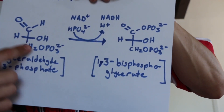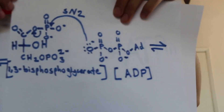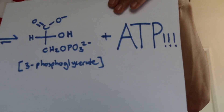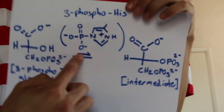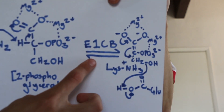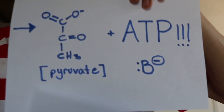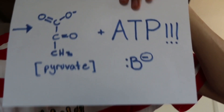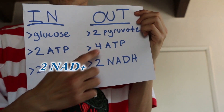Glyceraldehyde is then oxidized. Then you create bisphosphoglycerate, it's high in energy. Matter of fact it's so high in energy, it recreates ATP. 3-phosphoglycerate uses histidine, isomerizes to 2-phosphoglycerate. Better do an E1cb reaction to make phosphoenolpyruvate. ATP is created one more time. Don't forget this happened on both sides.